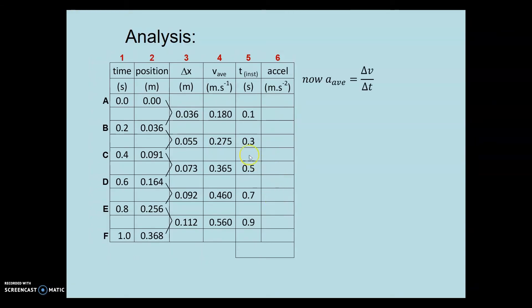It's change in velocity divided by this time interval. So if we subtract these two, divided by the time interval, 0.475 meters per second squared at a time halfway between those two, which again is the value in the first column.